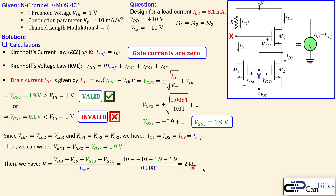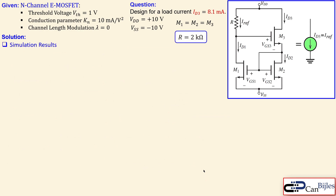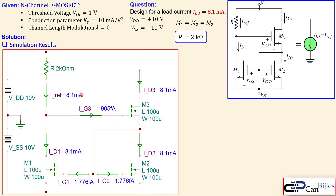Using the KVL equation, we can now express R: R equals (VDD minus VSS minus VGS3 minus VGS1) divided by IRF. Substituting: (10 minus (−10) minus 1.9 minus 1.9) divided by 0.0081 gives exactly 2 kilohms. So our required design resistor is 2 kΩ.